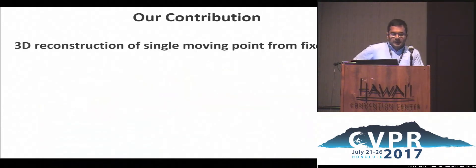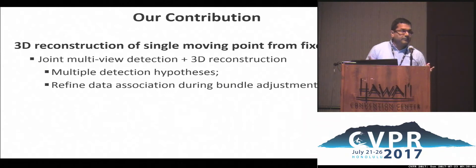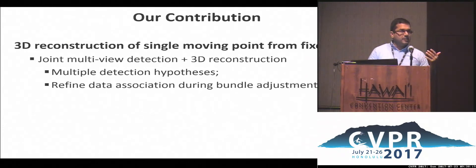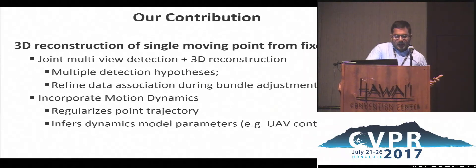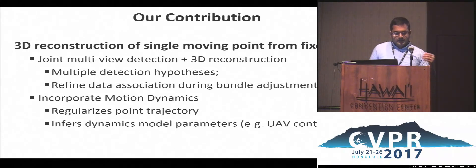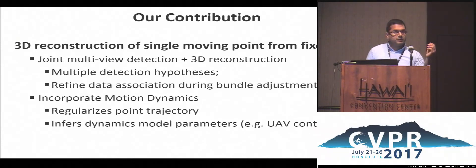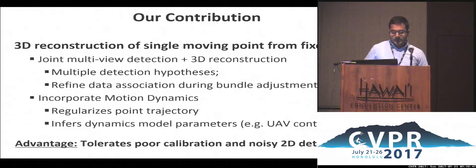Concretely, we are proposing a new technique for doing 3D reconstruction of a single moving point from a fixed set of cameras. We incorporate multi-view detection and 3D reconstruction — we keep multiple detection hypotheses in different frames of the video and refine the data association between the 3D point and the 2D observations while doing bundle adjustment. We also incorporate additional priors based on motion dynamics to regularize the trajectory, and we are able to infer latent model parameters about the moving point — for example, for the UAV, we can infer control inputs. We are also able to deal with poor calibration and noisy detections.